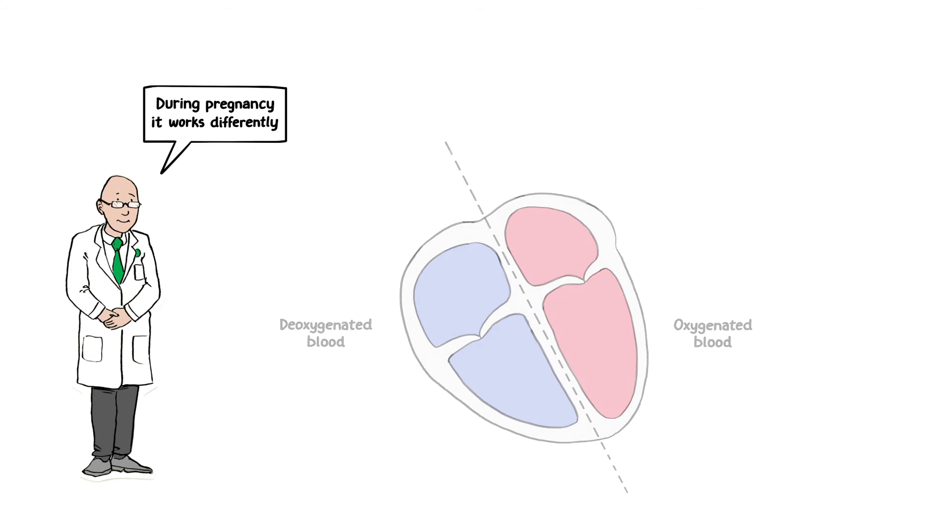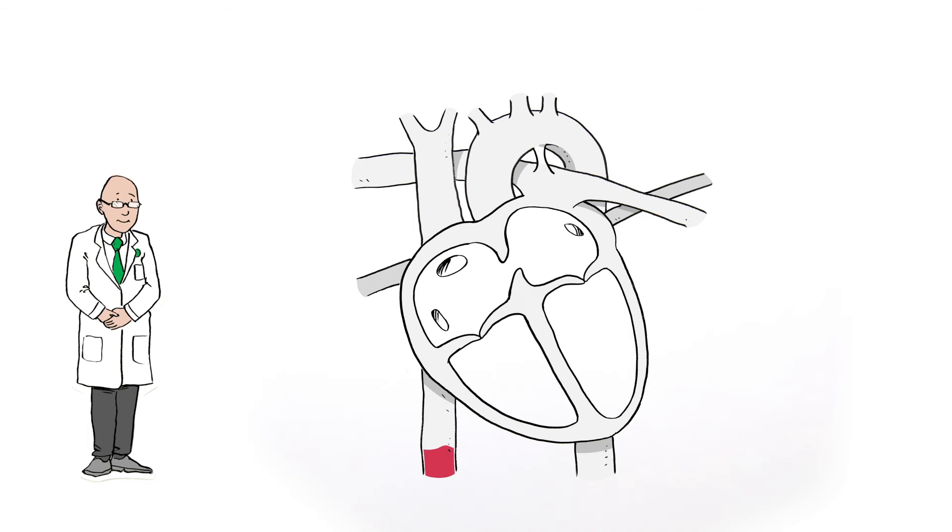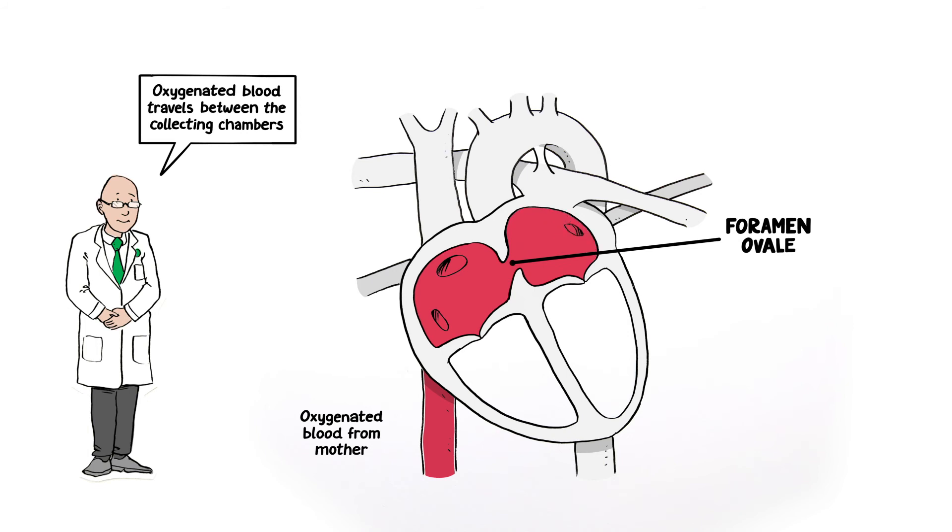During pregnancy, it works a little differently. While still in utero, a baby's blood is oxygenated by the mother and travels through an opening between the collecting chambers called the foramen ovale and crosses to the left side.